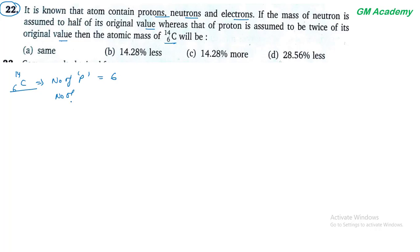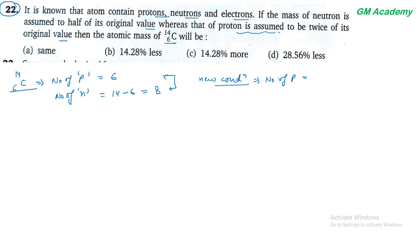Number of neutrons = mass number − atomic number = 14 − 6 = 8. New conditions के साथ: proton is assumed to be twice of its original value, original value 6 थी, तो twice = 12. Neutrons का original 8 है, उसका half = 4.